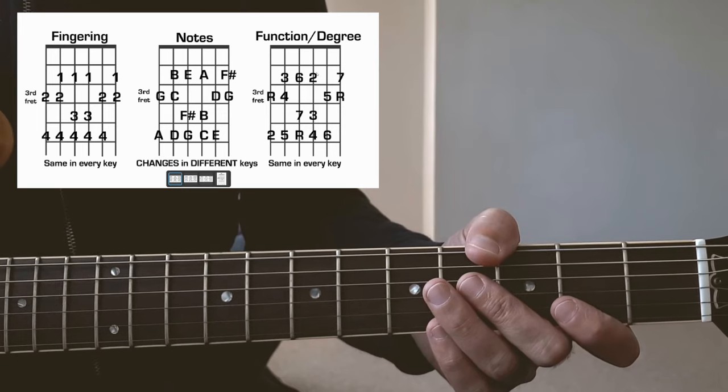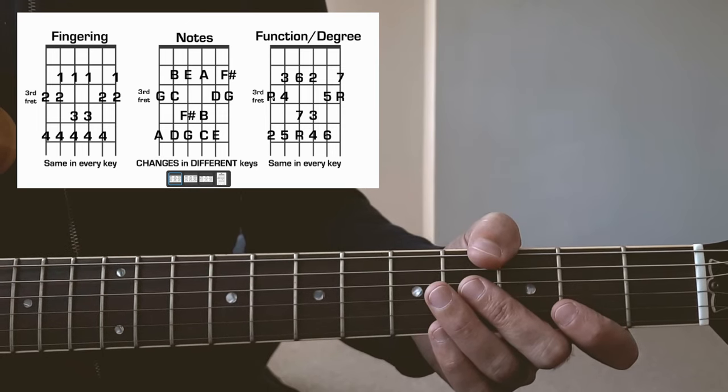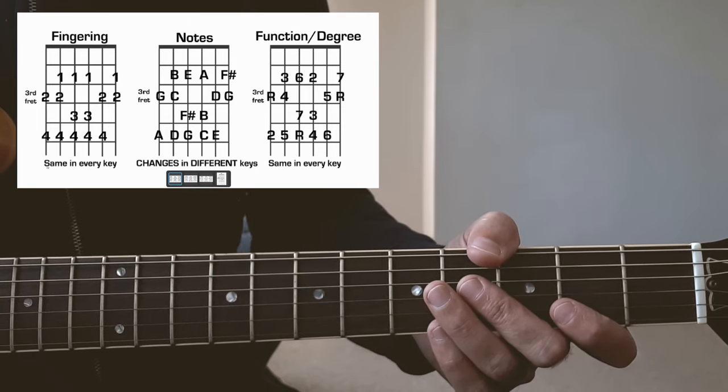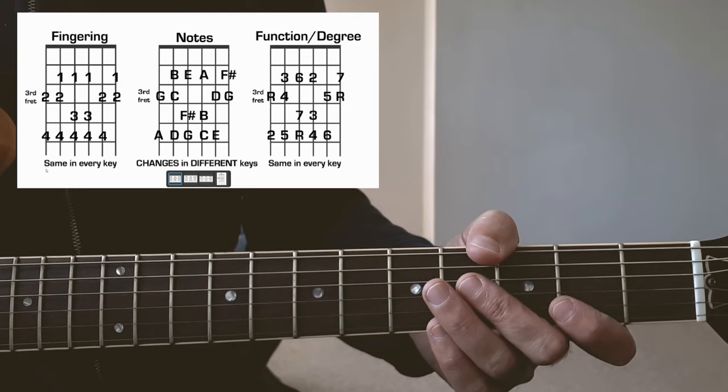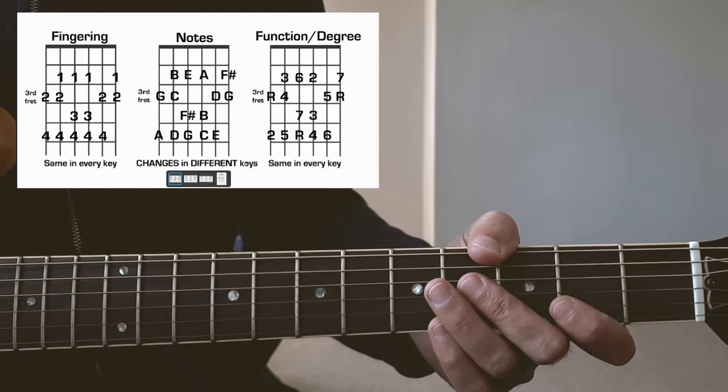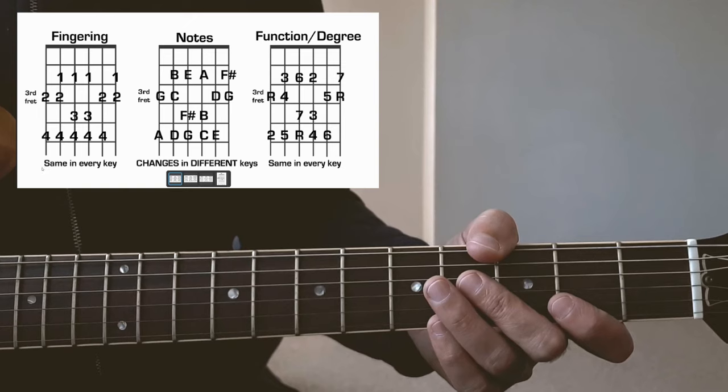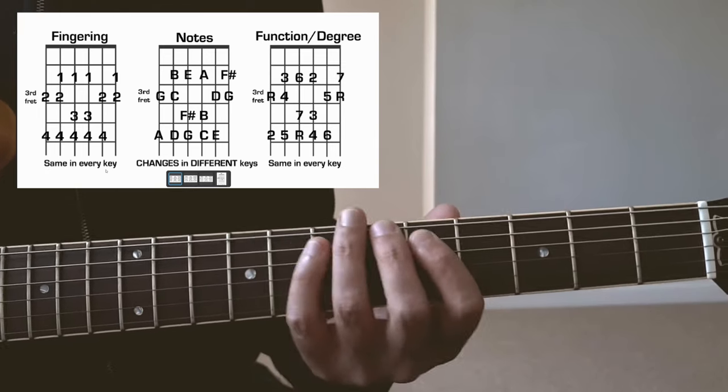So again, depending on what you need, that's more like the function of the notes within that key. You see that at the bottom of the box I've written 'same in every key,' 'changes in different keys,' and 'same in every key,' because obviously the fingering, if I go to B flat instead of G...